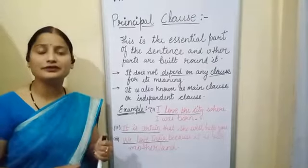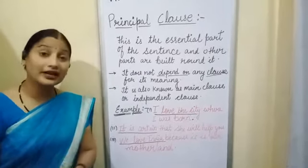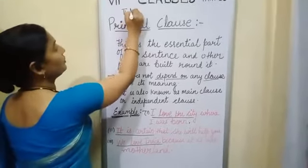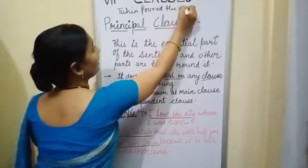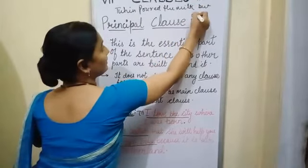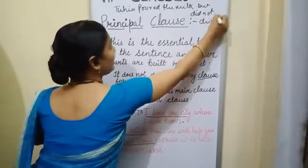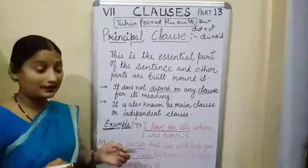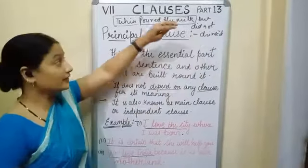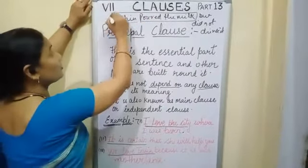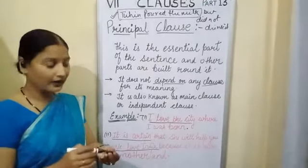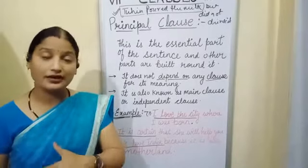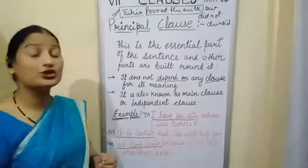In your book, the example given is: 'Toheen poured the tea but didn't drink it.' In this example, 'Toheen poured the milk' is a complete sentence — it does not depend upon any other clause and is complete in its own. That's why it is called the principal clause, main clause, or independent clause. A clause which does not depend upon any other clause is called the principal clause. Our next topic will be coordinate clause.